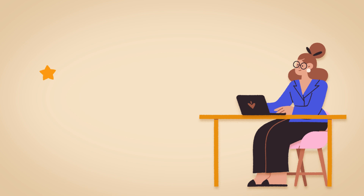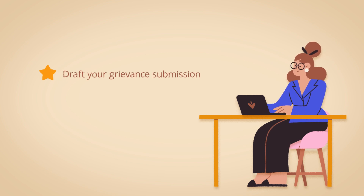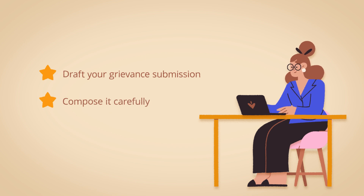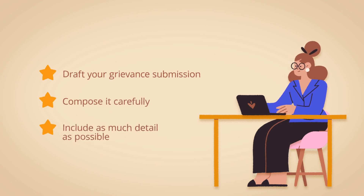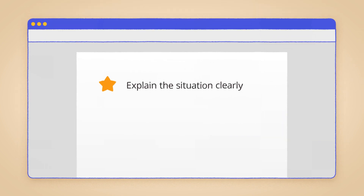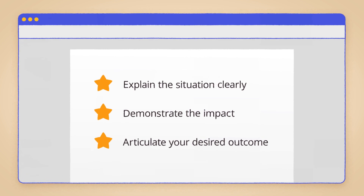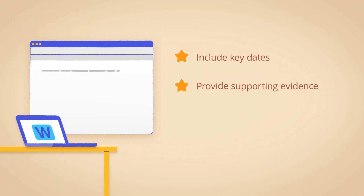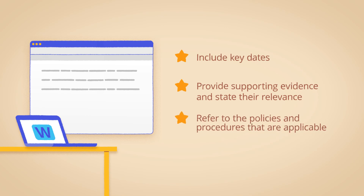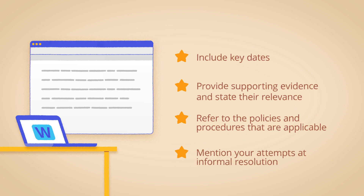Next, you need to draft your grievance submission. Given that this is a formal document, take the time to compose it carefully and include as much detail as possible. You need to explain the situation clearly, demonstrate the impact, and articulate your desired outcome. You should also include key dates, provide supporting evidence such as emails or medical certificates — ensuring that you state their relevance to the case — and refer to the policies and procedures that are applicable, especially if you're stating that the university has not followed the correct process. And if you attempted informal resolution, be sure to mention this in your documentation.